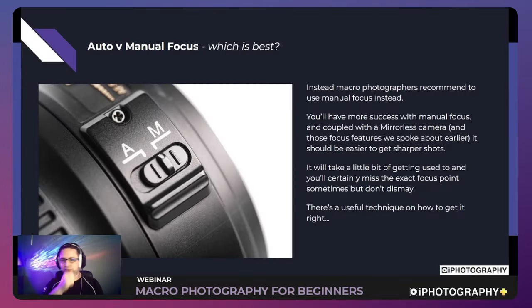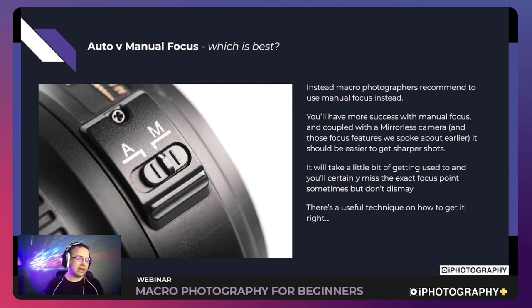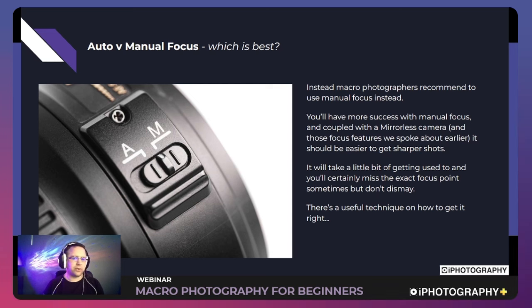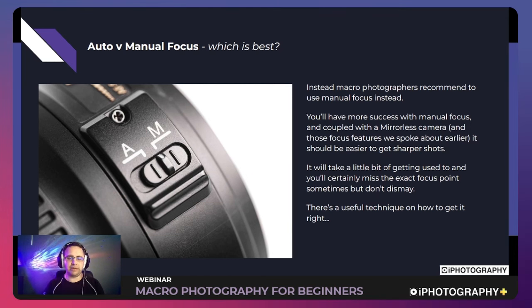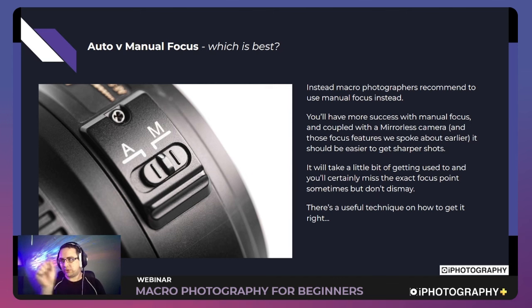Most professional macro photographers recommend manual focus. Coupled with a mirrorless camera's focus peaking and live view magnification, it becomes much easier. It can take a little extra time, but it pays dividends with better sharpness. If you're photographing flowers, you have more time than with insects. Sometimes manual focus is actually quicker than autofocus hunting around in low light trying to find a clean edge.